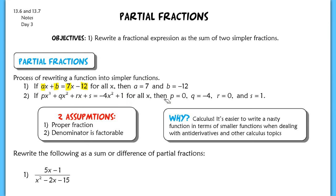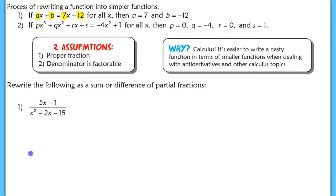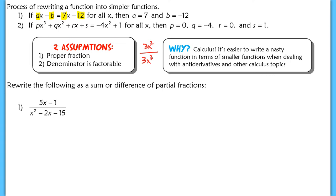We have two assumptions when writing partial fractions. First, we assume our fraction is always a proper fraction, meaning the numerator's degree is smaller than the denominator's degree — for example, 3x squared over 3x cubed would be proper. If it were 3x cubed over 3x squared, that would be an improper fraction because the denominator's degree is smaller than the numerator's.